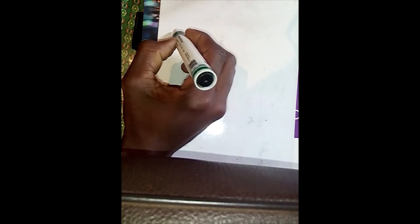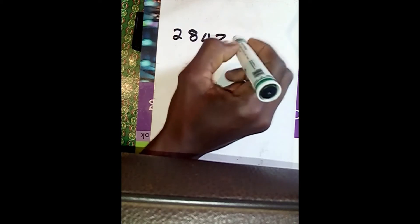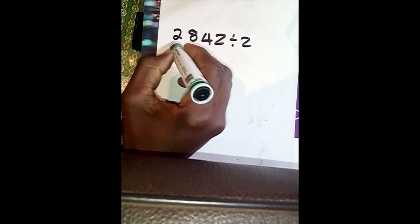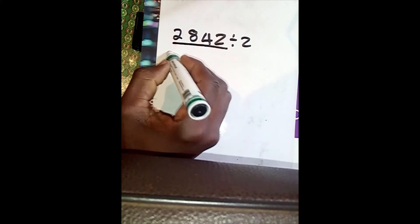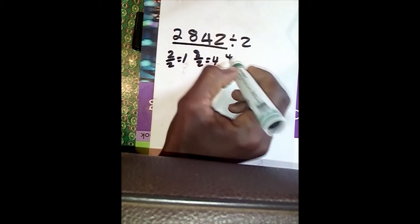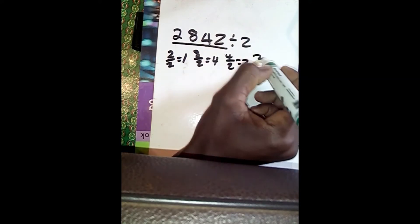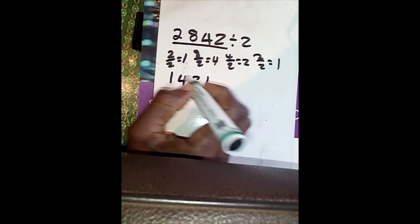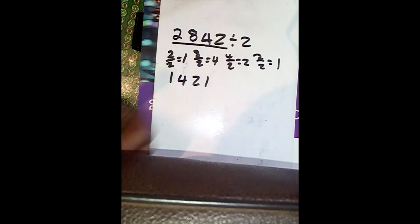Now one last example: let's say you are given 2842 divide by 2. You do the same. Don't fear how big the number is. You say 2 divide by 2 equals 1, 8 divide by 2 equals 4, 4 divide by 2 equals 2, and 2 divide by 2 equals 1. So we have got 1421. So 2842 divide by 2 gives us 1421 — simple as that.